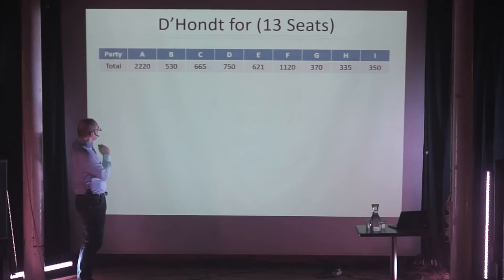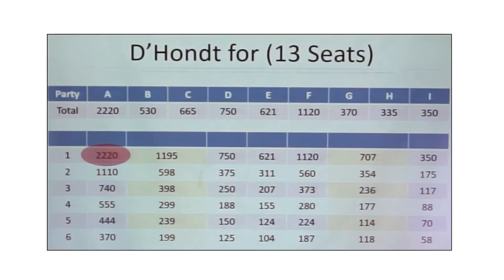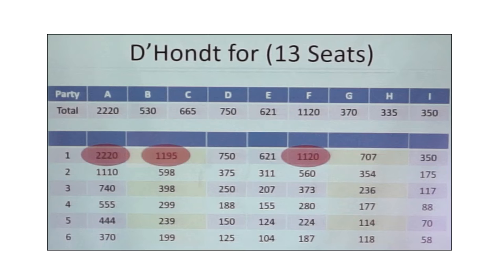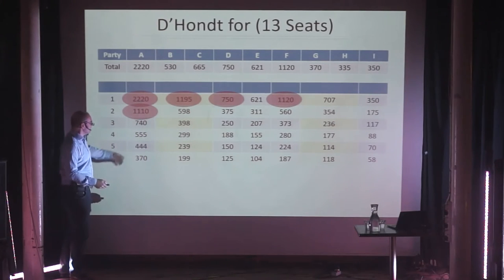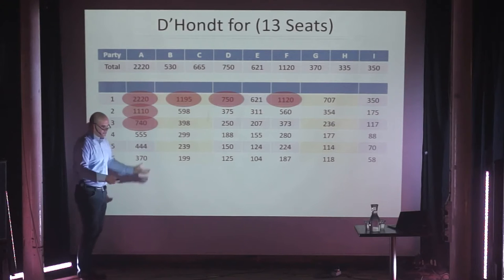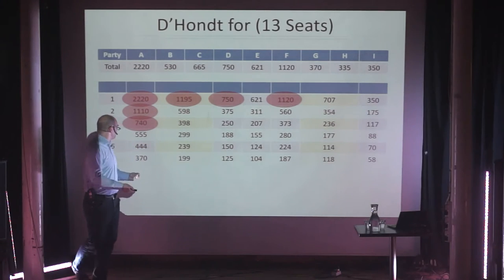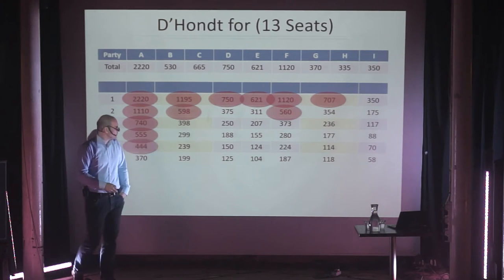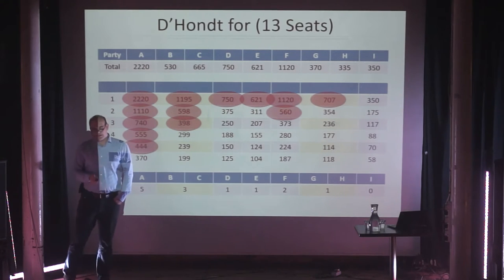In the D'Hondt algorithm, you find the one with the highest vote count and give them the seat. Then you find the second highest, then the third. For the fourth seat, the algorithm says: party A, I give you two seats for 1,100 ballots — if 1,100 is the highest number. So party A gets two seats. The next one is 750, then 740 as a third, and you continue assigning all 13 seats to find the winner.